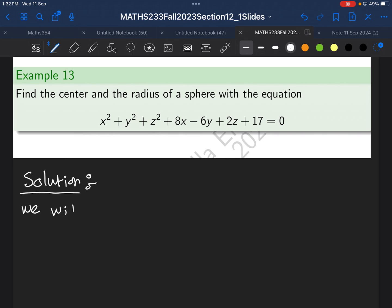We will complete the square, which is an idea you have seen before, especially in calculus 2 when we did partial fractions. We will do the same. And now let me remind you how we do completing the square. What you need to do is start first with the variable x. Try to get x together.